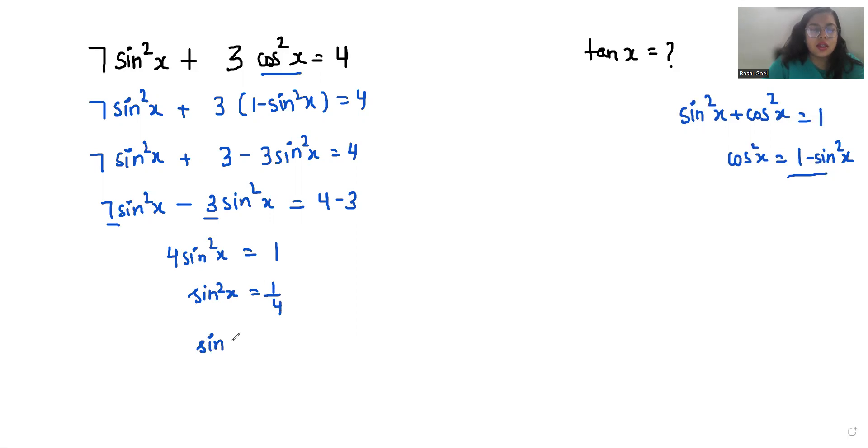Taking the square root, sin x = ±1/2. The negative value does not apply since x is an angle, so sin x = 1/2, which corresponds to 30°.